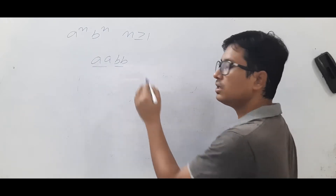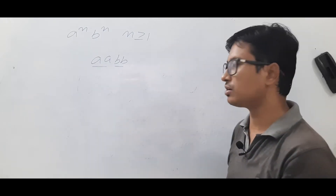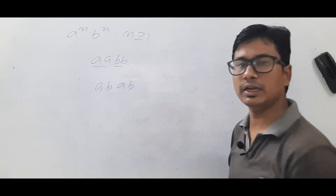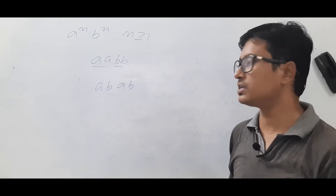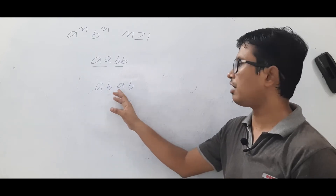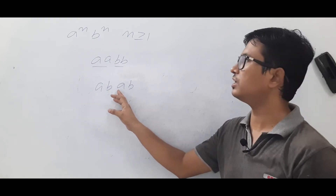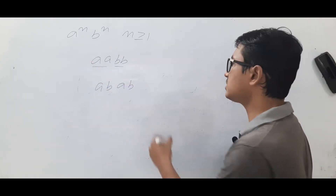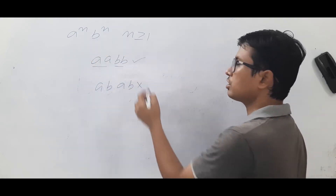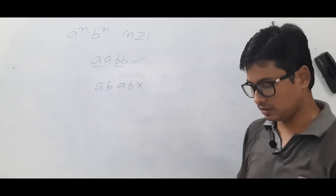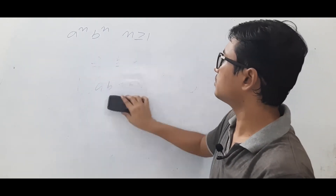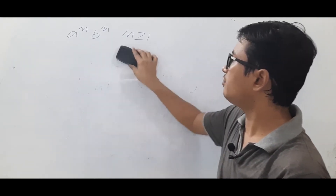However, the string ABAB is not accepted. Even though the number of A's equals the number of B's, once you encounter a B, an A follows — that is not allowed. So ABAB does not belong to this language, while AABB does.